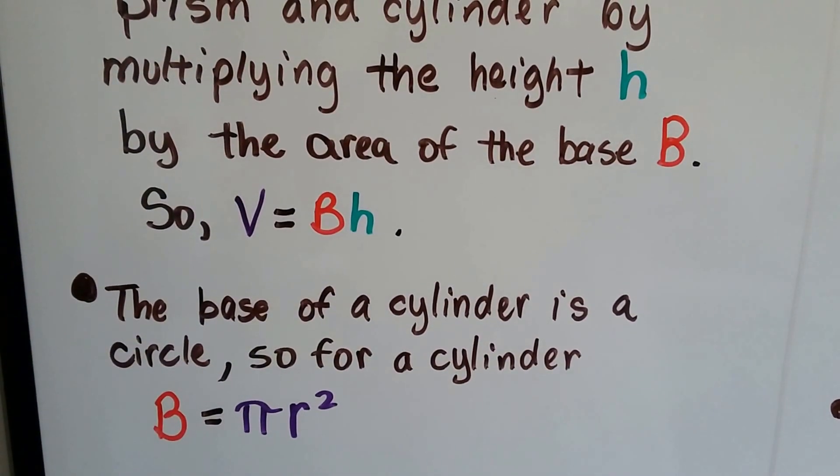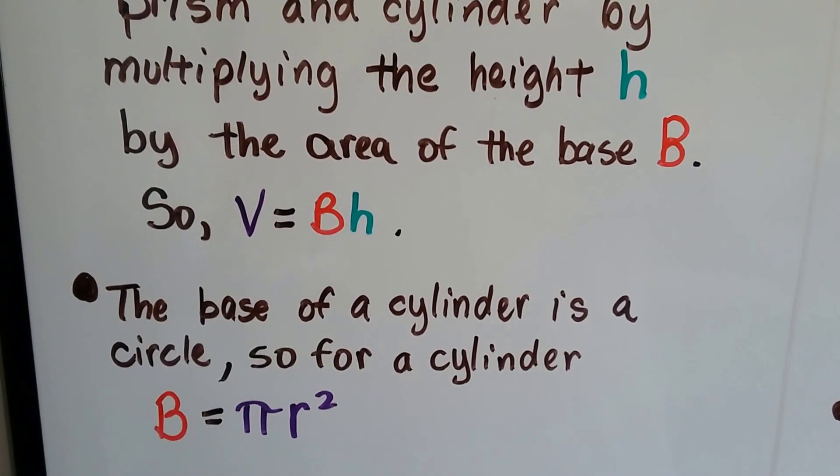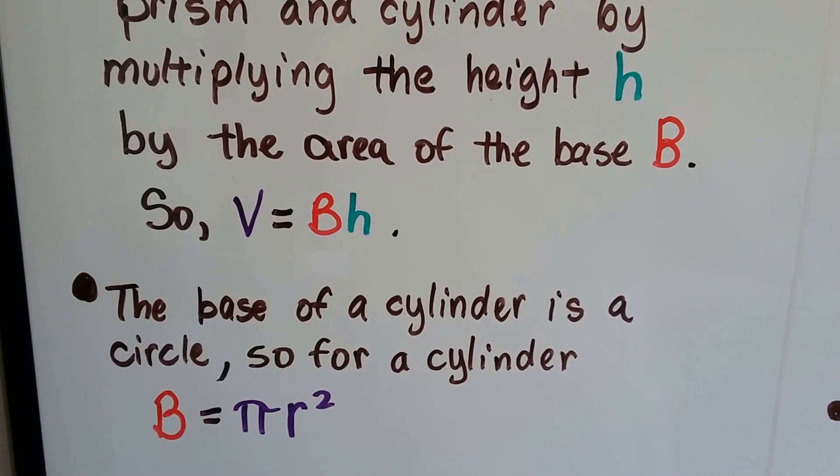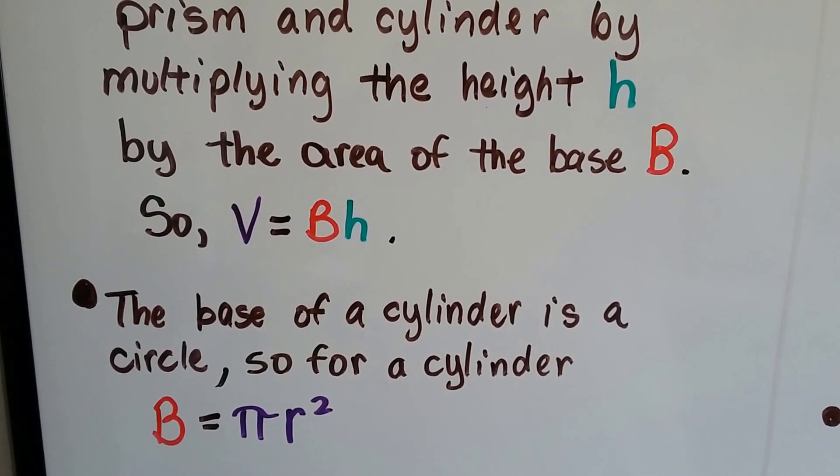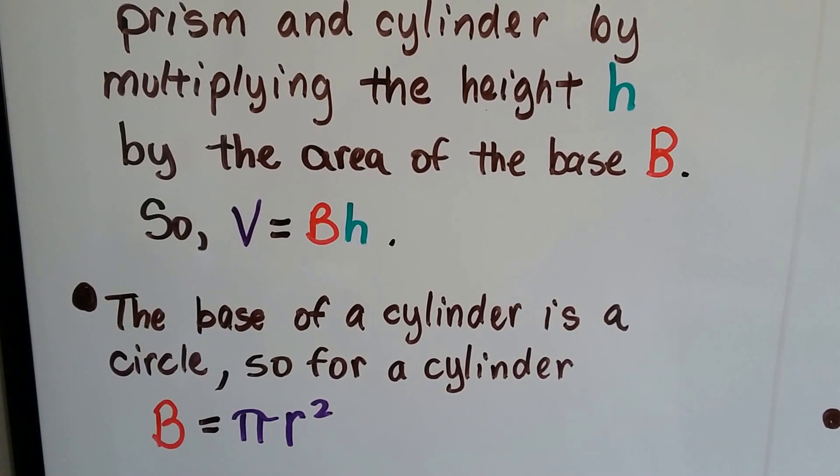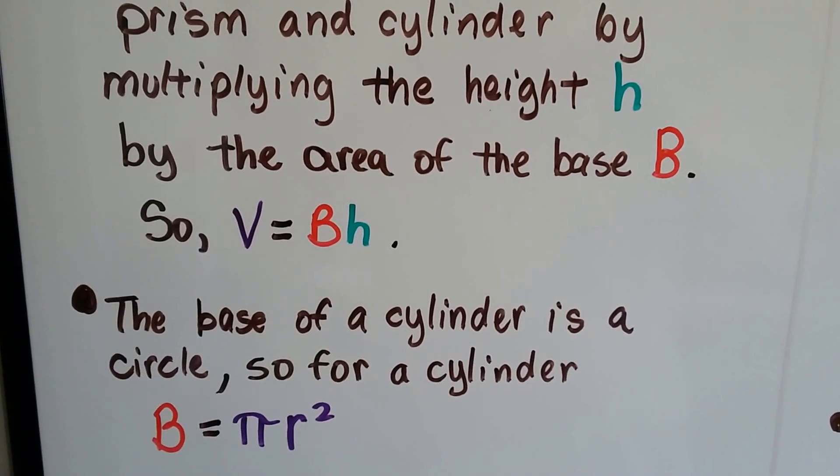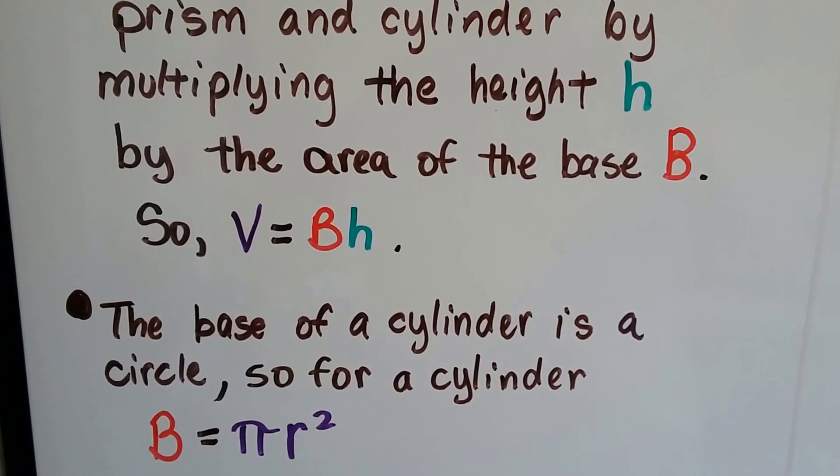The base of a cylinder is a circle, and so for the cylinder, we use base equals pi r squared. So it's the area of the base, and if it's a circle, we need the area of a circle. The formula for the area of a circle is pi r squared.